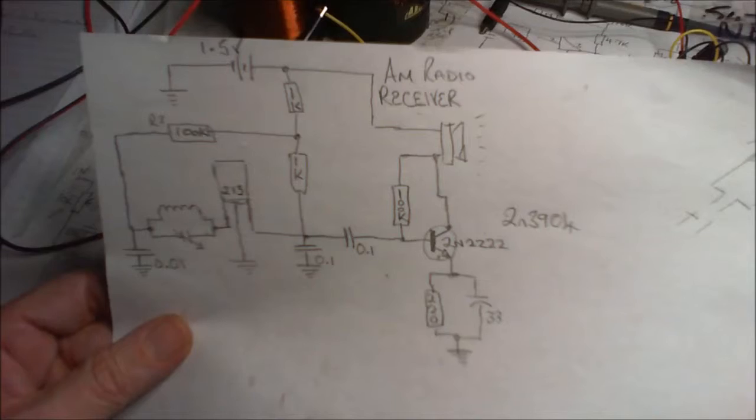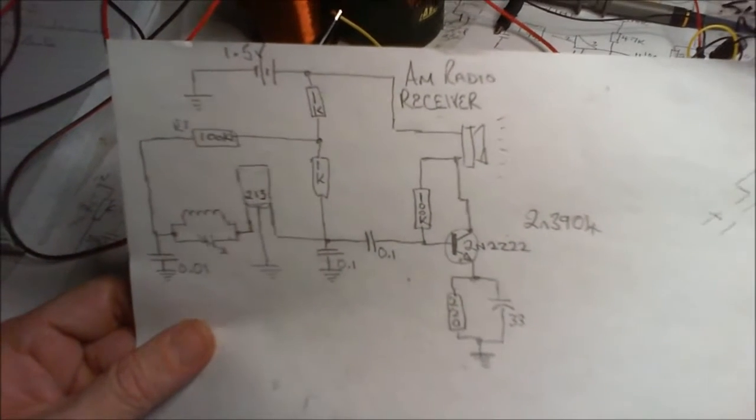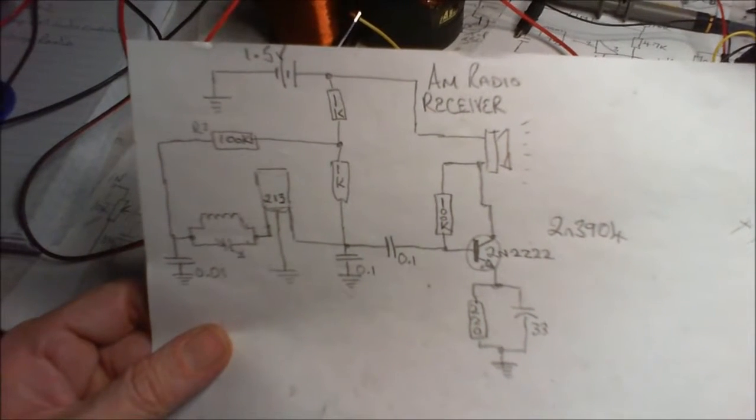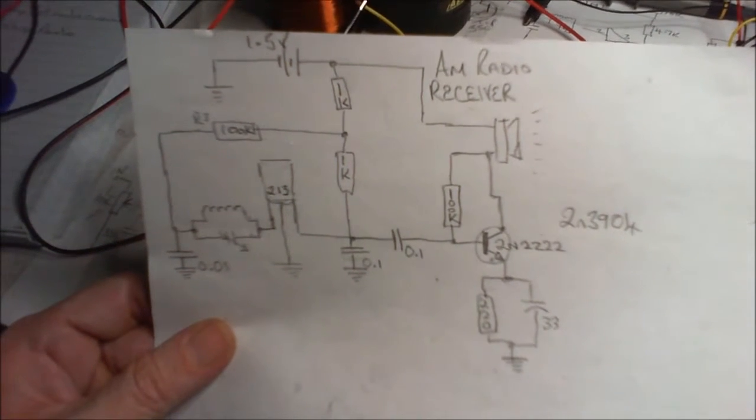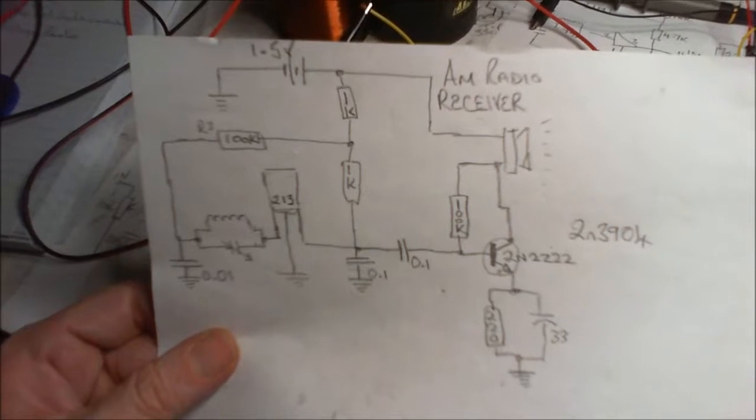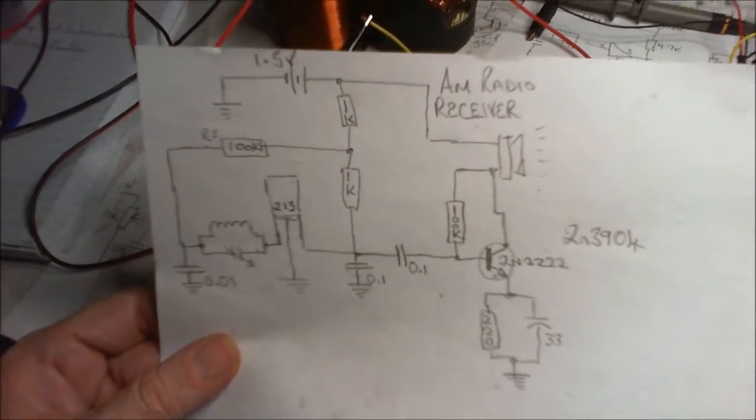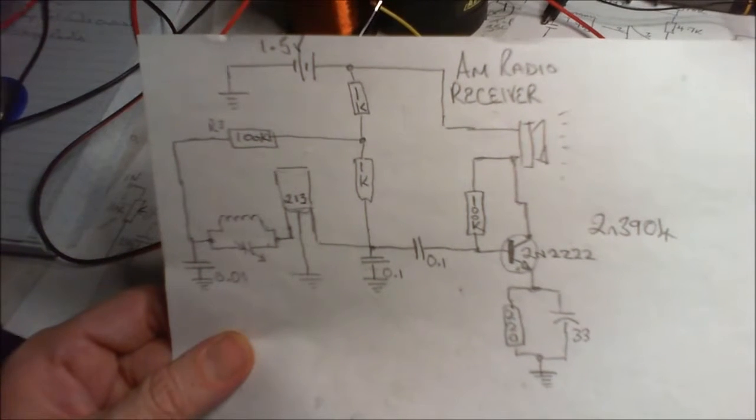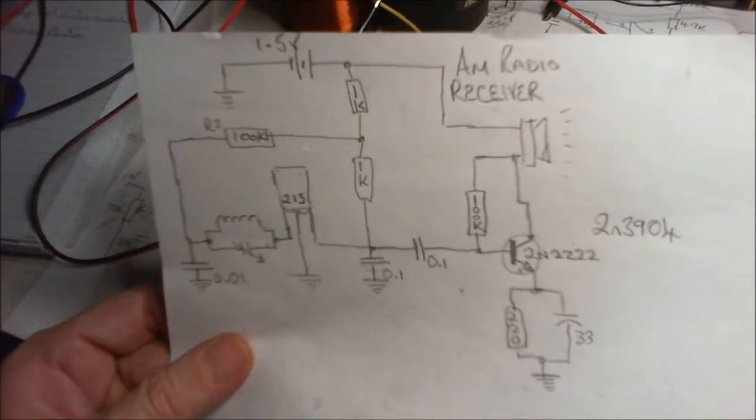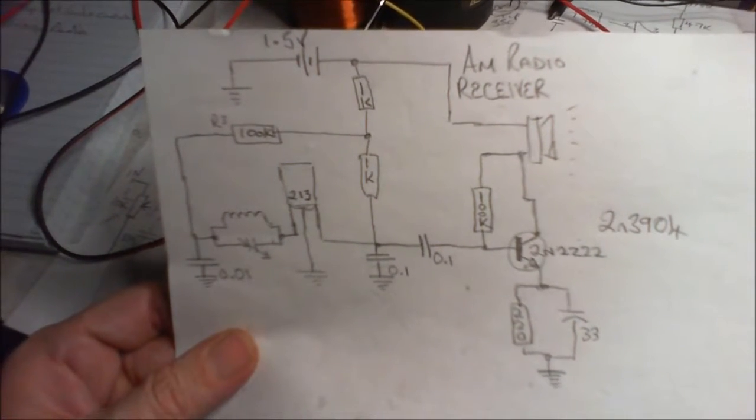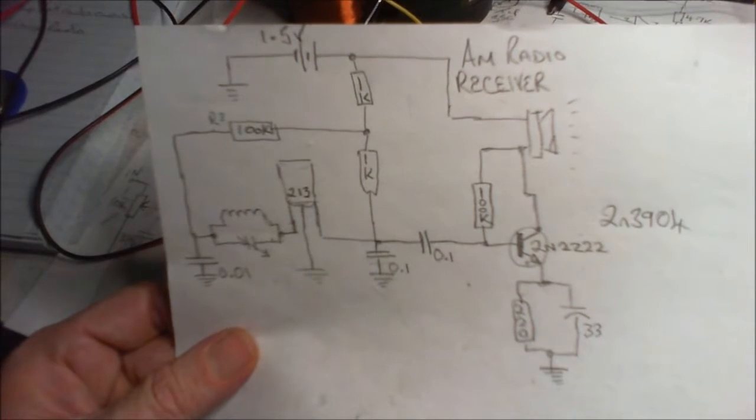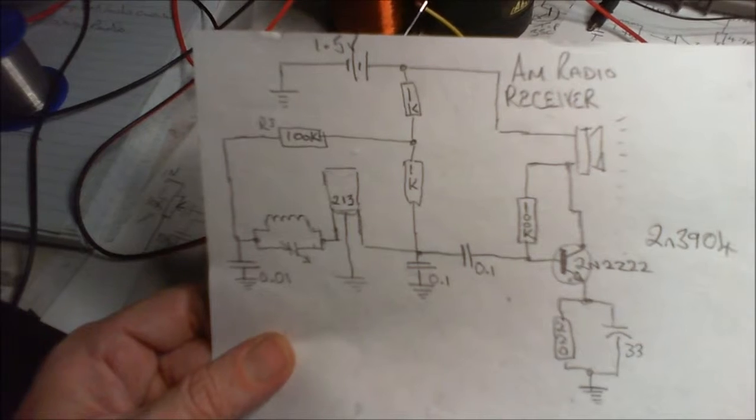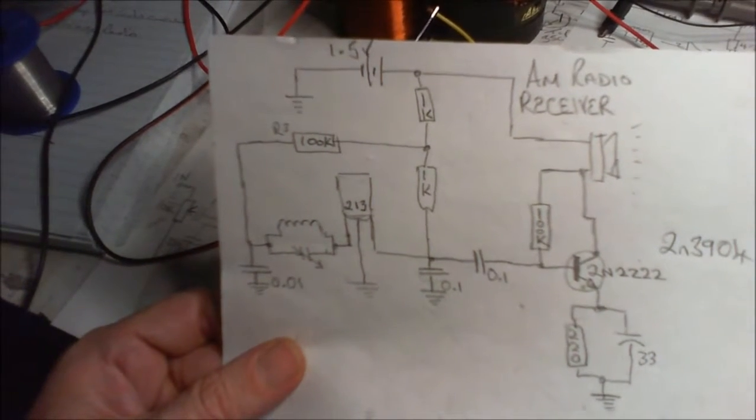That's what I've gone for. It did have a 2N3904 as the transistor and I changed it to a 2N2222. And 33 microfarad down the bottom there in that little tank circuit thingy. I put a polarized ceramic in of 33 microfarad and I use ceramics everywhere else.